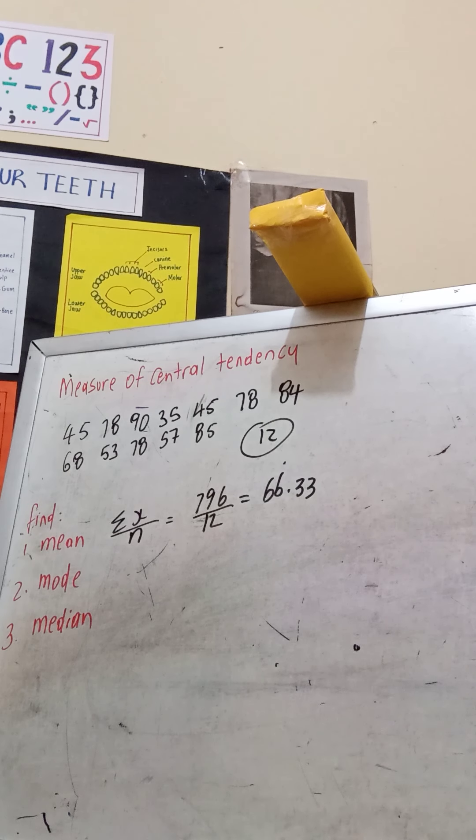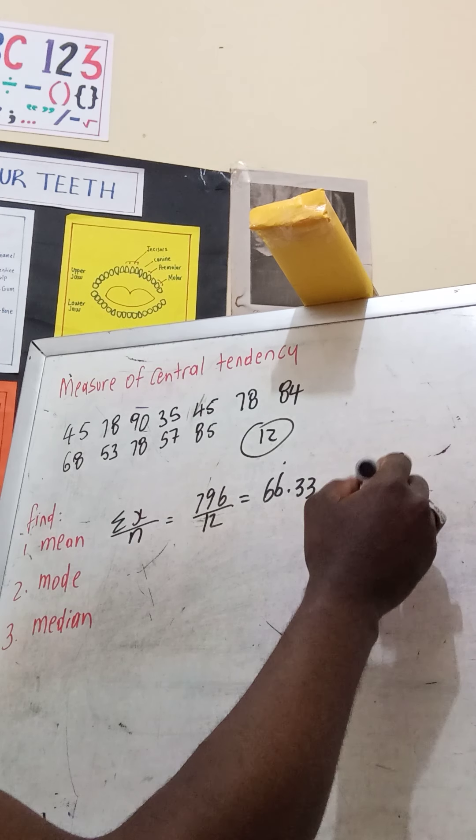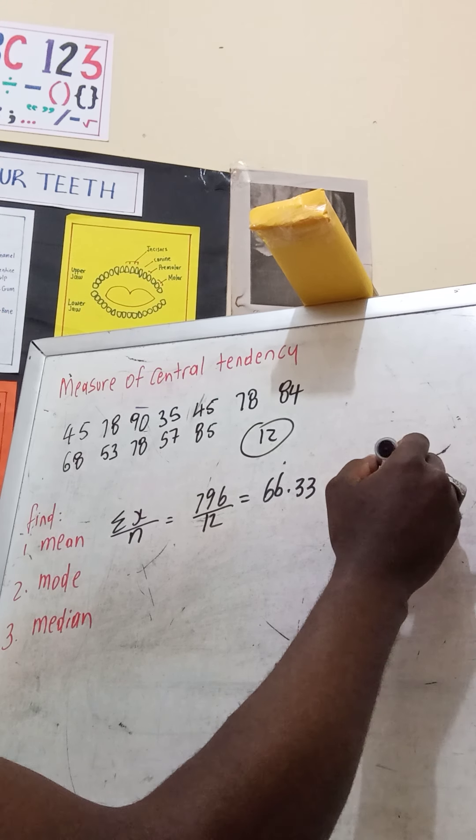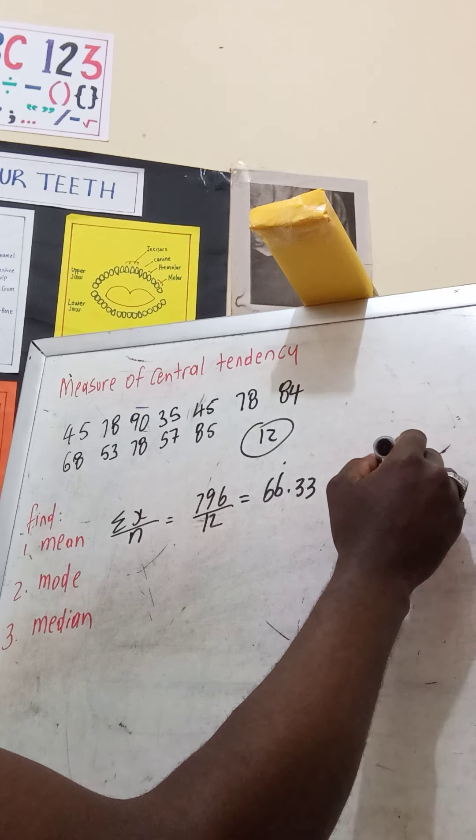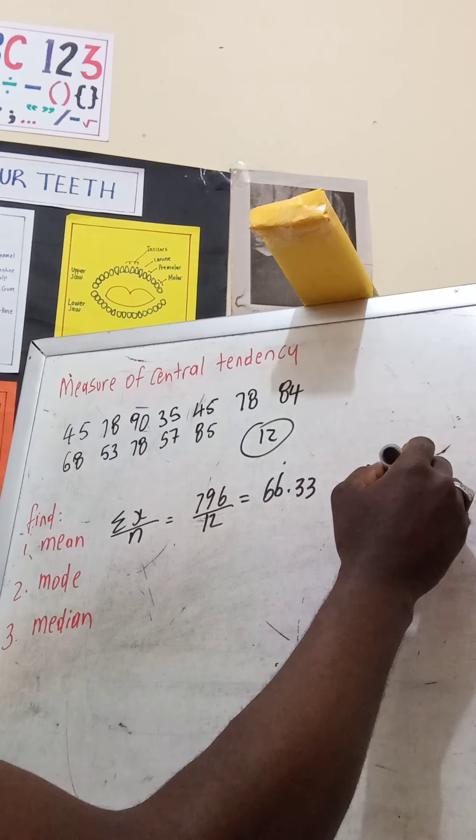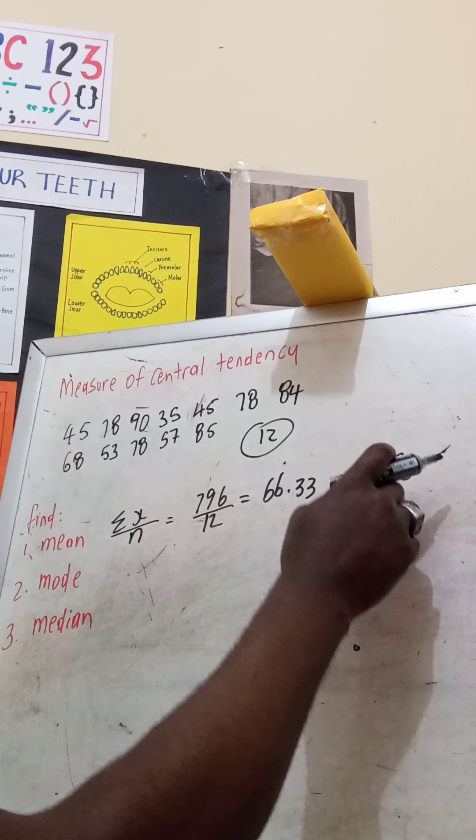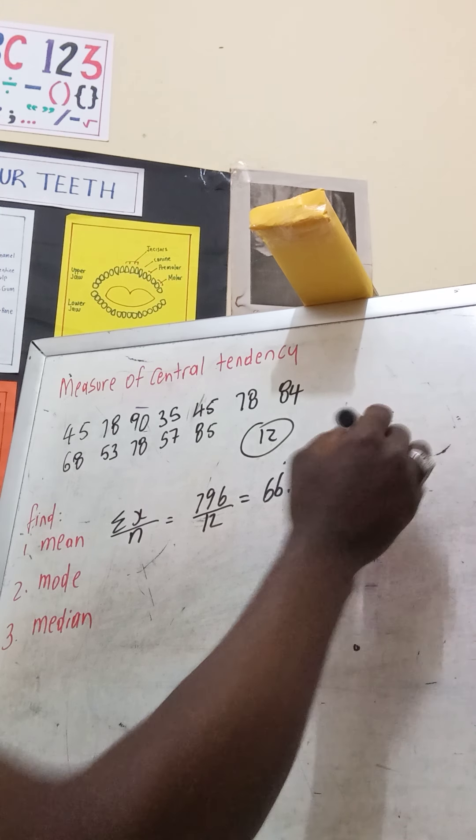If you don't want to use your calculator, you can always go ahead and do long division. 796 is the dividend, and the divisor will be 12. You can find your quotient up here.